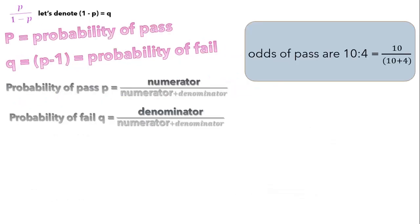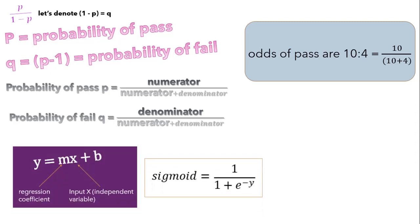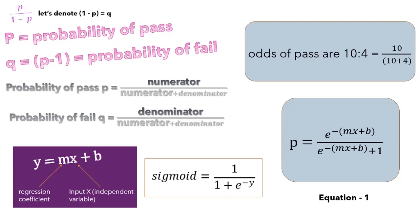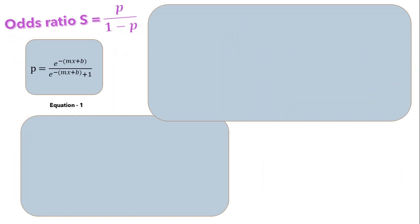If the odds of pass are 10:4, then the probability of pass p = 10 / (10 + 4) = 10/14. To connect this with the sigmoid function, we have the linear regression equation y = mx + b and sigmoid function 1 / (1 + e^(-y)). Substituting y with its value mx + b, and assuming m as the summation of all independent variable slope values, the equation looks hard to solve. So let's transform it into an easier form using the odds ratio p / (1 - p).